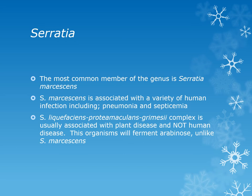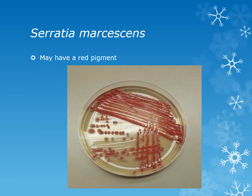Serratia marcescens is especially problematic for immunocompromised people and can be quite antibiotic resistant. About 90% of the time this organism is gray, but there is a mutation that occurs in some strains where it has a distinctive brick red pigment.